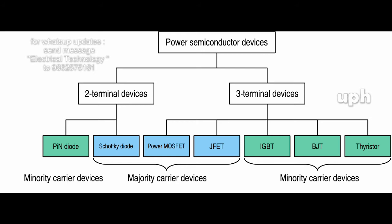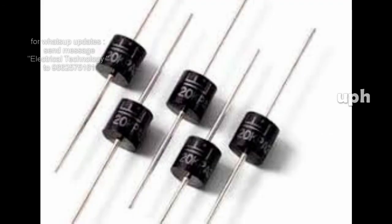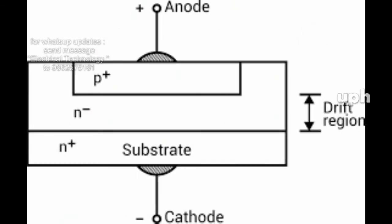Power electronics technology is different from vacuum and gas discharge tube devices and electromechanical devices technologies. First, the diode - it is also called a power diode. The power diode has a PIN structure, where I is the intrinsic semiconductor layer. It has 2 terminals: anode and cathode. It allows unidirectional current flow. When the voltage exceeds a set limit, current stops flowing through the diode.